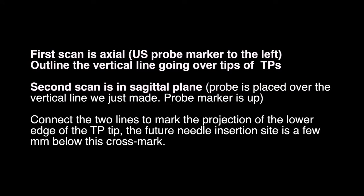Step 2: Ultrasound-guided marking of the required TP tip. The first scan is axial, with the ultrasound probe marker to the left. Outline the vertical line going over the tips of TP. The second scan is in the sagittal plane; the probe is placed over the vertical line with the probe marker up. Connect the two lines to mark the projection of the lower edge of the TP tip. The future needle insertion site is a few millimeters below the cross mark.